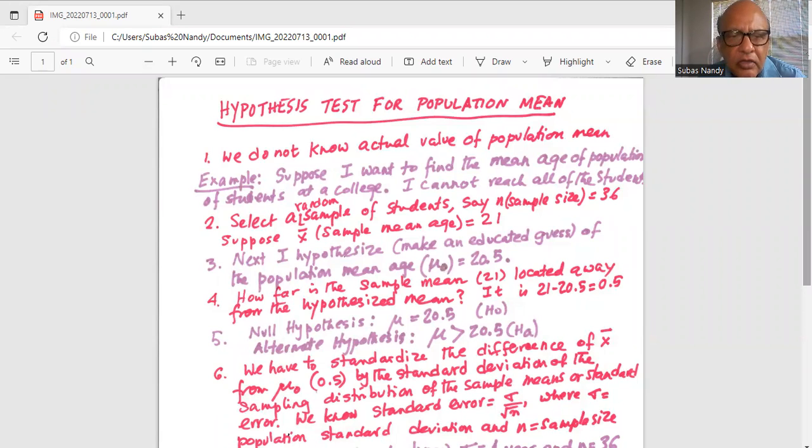Physically not possible. So I'll select a random sample of students, say sample size equal to 36. Suppose the sample mean age comes out to be 21. Next I hypothesize, that is I make an educated guess of the population mean age which is indicated by the symbol mu0 as 20.5.